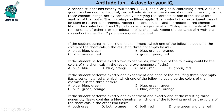There is a science student who has 4 flasks: 1, 2, 3, 4. They contain red, blue, green and orange chemical respectively. So flask 1 contains red, flask 2 contains blue, flask 3 contains green, and flask 4 contains orange.